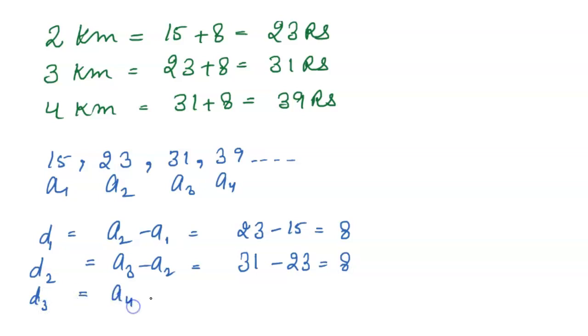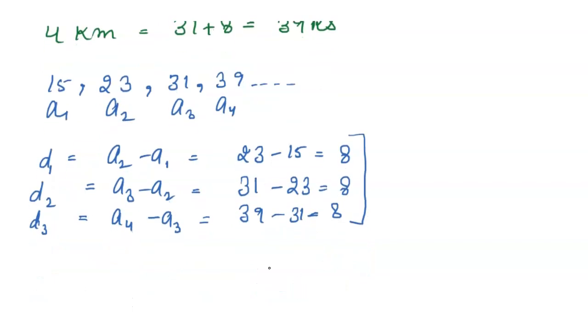Now the last is a4 minus a3, which equals 39 minus 31 equals 8. So you can see that the difference between these terms is same, so we can say that the given situation or statement shows AP series. Thank you very much.